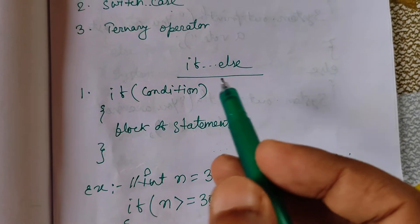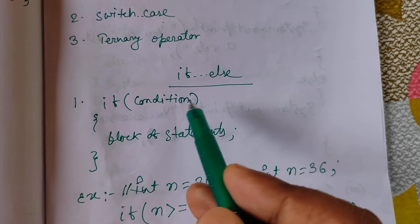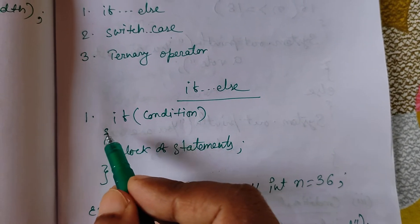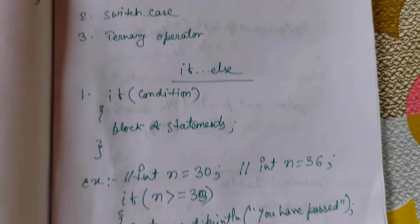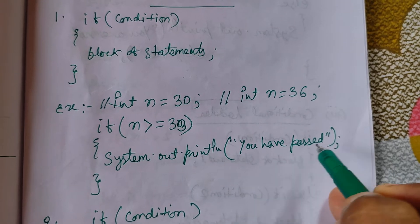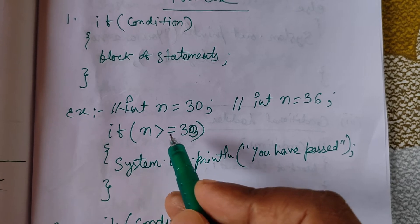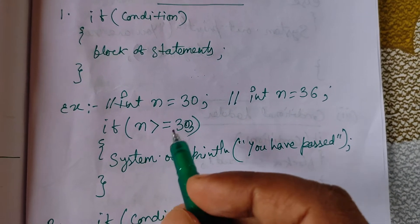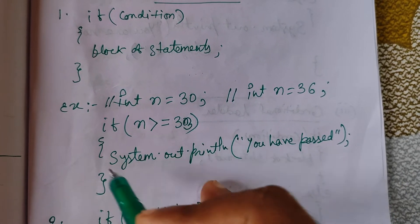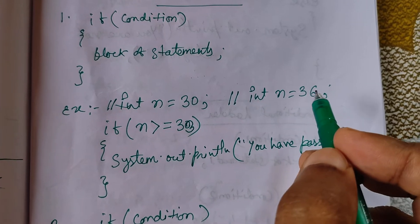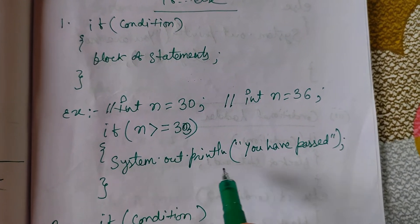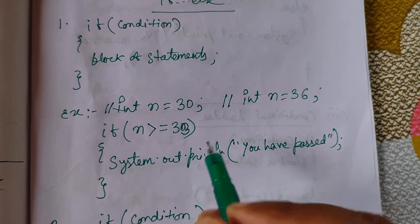In if-else we have four different parts. First is simple if. If the condition is true, only then the block of statements — the body — will execute, otherwise it will not. Example: if n >= 33, then System.out.println("you have passed"). If n equals 30, the condition is false so it will not execute. But if n is 36, the condition is true and it will print 'you have passed'.